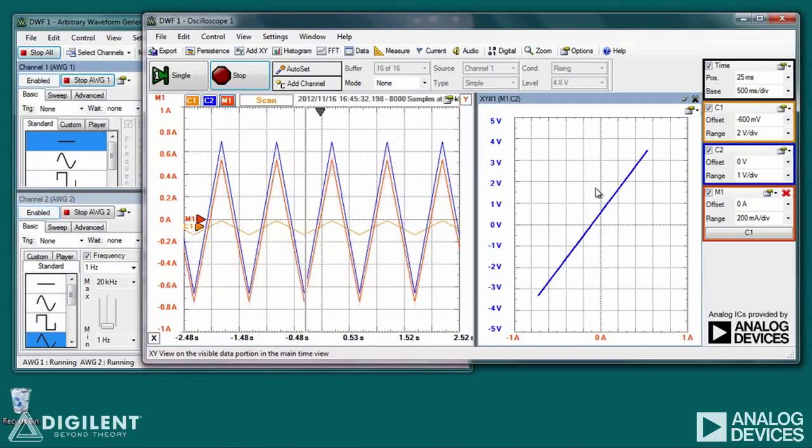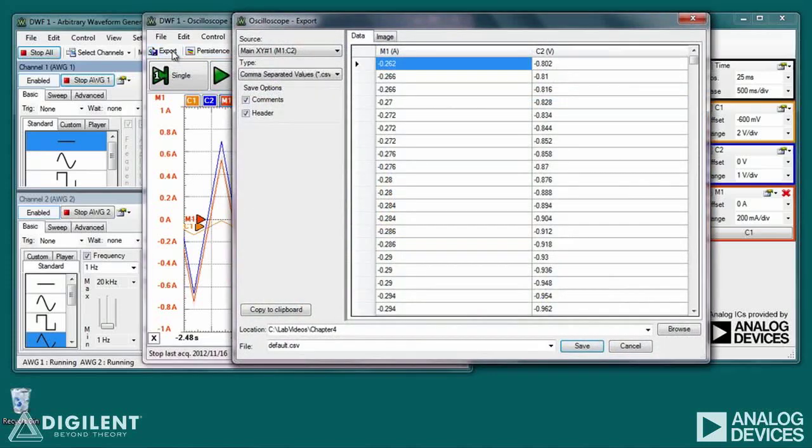Let's go ahead and export this voltage-current relationship to Excel where we can analyze it and determine the y-intercept and the slope. So click on export. We'll save it there as our demo file.